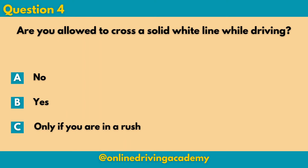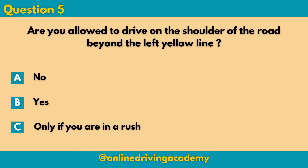Question 4: Are you allowed to cross a solid white line while driving? The correct answer is no — you are not allowed to cross a solid white line at all. Question 5: Are you allowed to drive on the shoulder of the road beyond the left yellow line? The correct answer is no. You are not allowed to drive on the shoulder of the road. The only time you are allowed to go beyond that yellow line is if your vehicle breaks down, so you park your vehicle beyond that left yellow line.